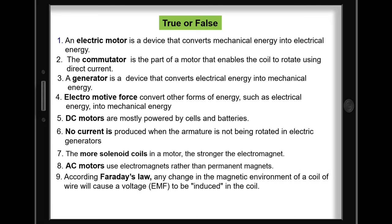9. According to Faraday's law, any change in the magnetic environment of a coil of wire will cause a voltage to be induced in the coil. 10. Most appliances at home are powered by electricity generated by generators in power plants.